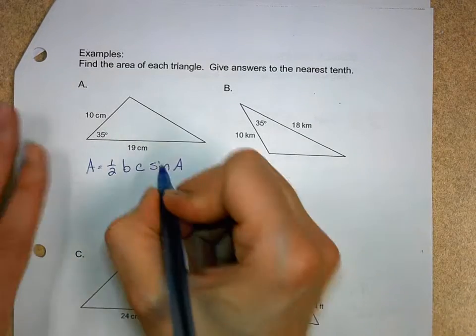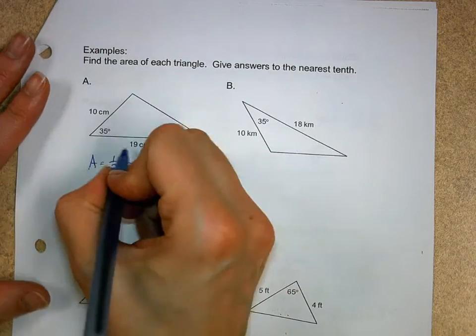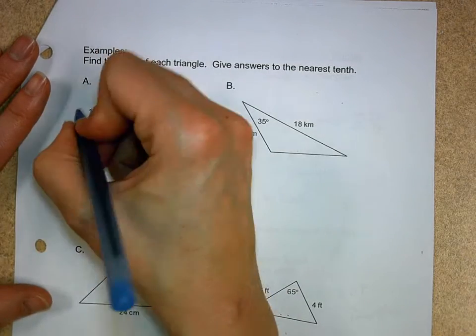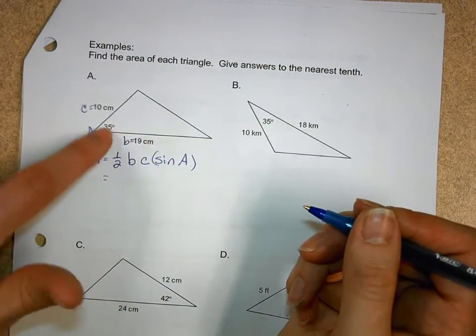Now, what in the world is that value going to be? Well, if I'm looking at this, I'd probably let 19 be B. Well, that means the other side is automatically C, and your angle is 35, so sine, angle, sine.